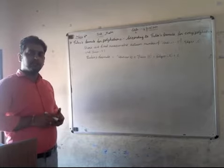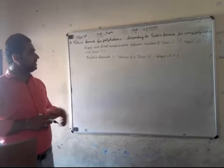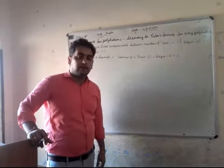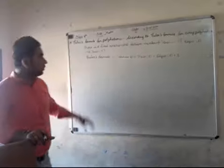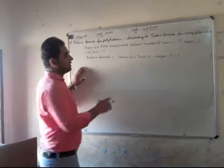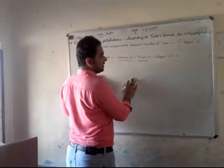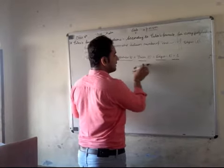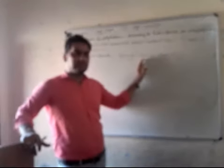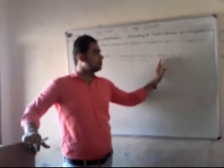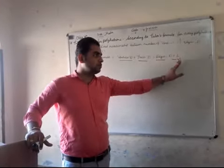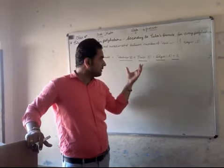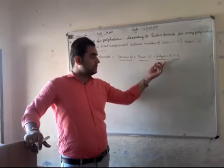That relationship is Euler's Formula: V + F = E + 2. Euler's Formula states V + F = E + 2.